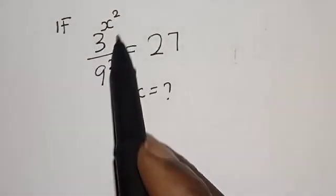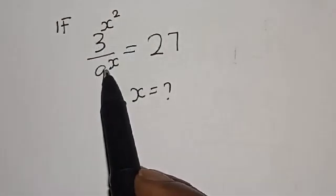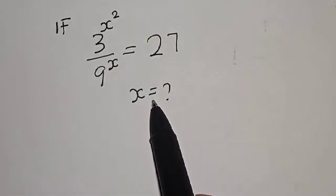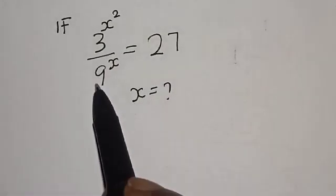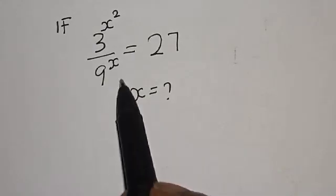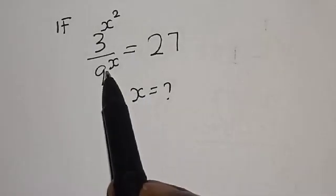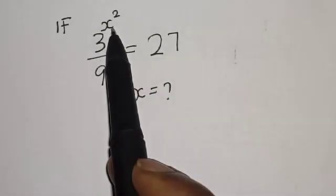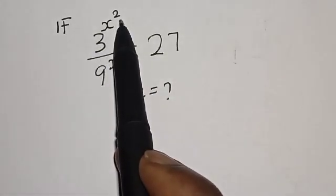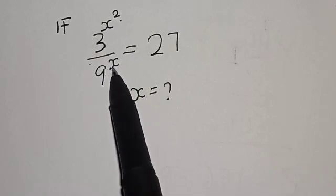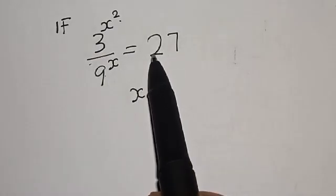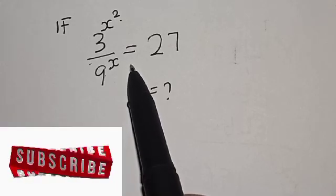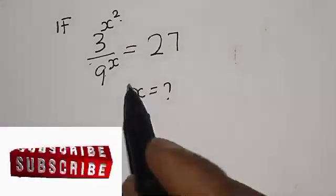If 3 raised to the power s squared divided by 9 raised to the power s is equal to 27, what is the value of s? Welcome to Math Gist. In this class we want to find the value of s from this exponential equation: 3 raised to power s squared divided by 9 raised to power s is equal to 27.